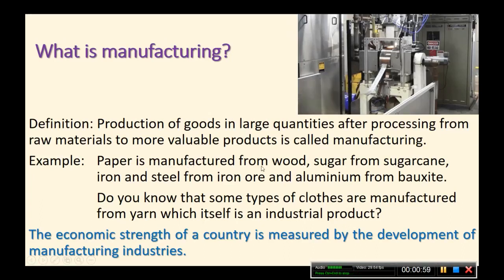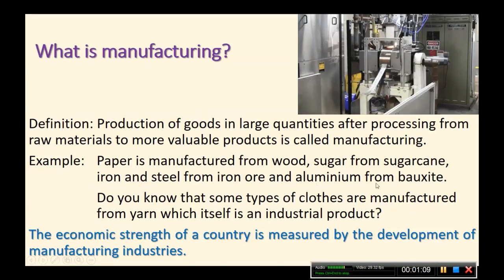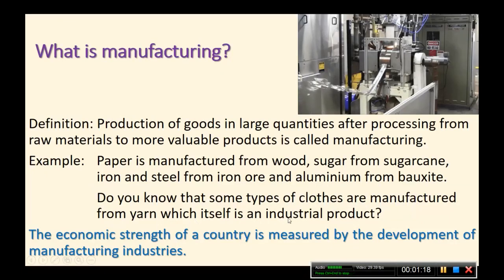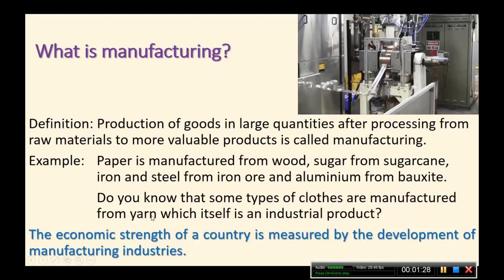Examples of manufacturing: paper is manufactured from wood, sugar from sugarcane, iron and steel from iron ore, aluminium from bauxite. Some types of clothes are manufactured from yarn, which itself is an intermediate industrial product — yarn is already an industrial product and it is used for production in a further process.